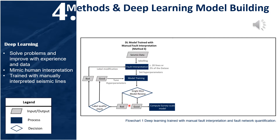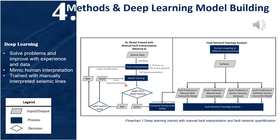If the fault input is good but the prediction is not, there are things called hyperparameters that can tweak the deep learning system to enable, disable, or change the weight of certain parameters within the system. Fault predictions from different methods are then compared.